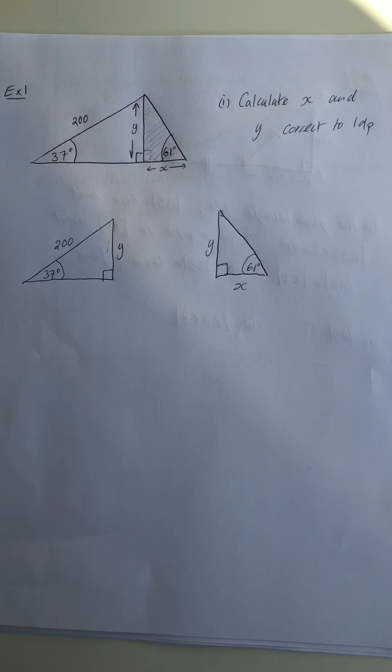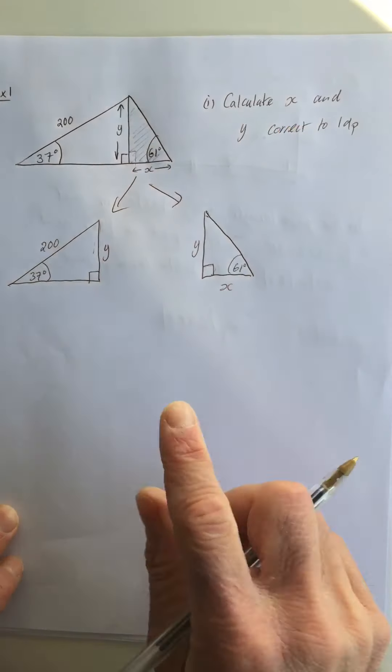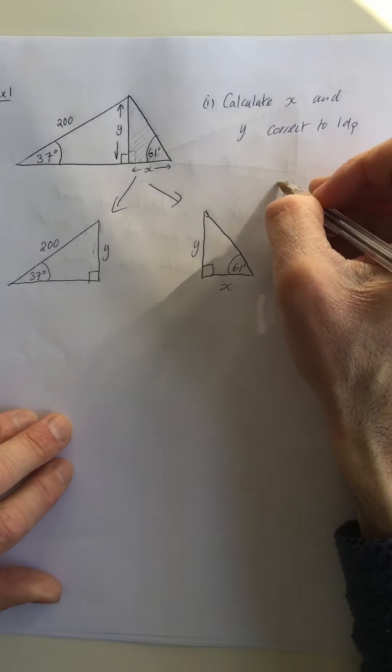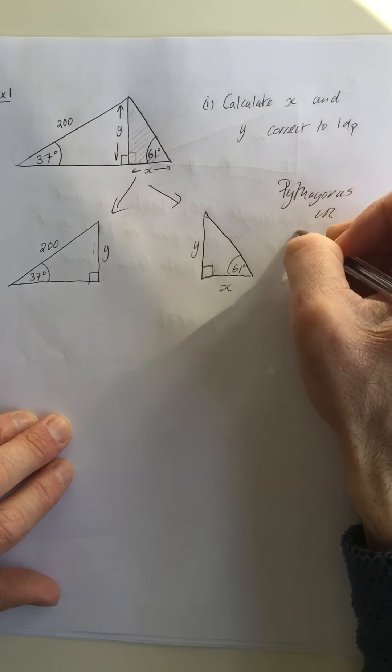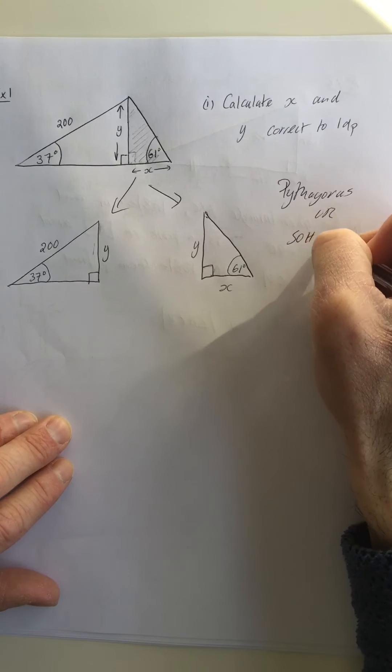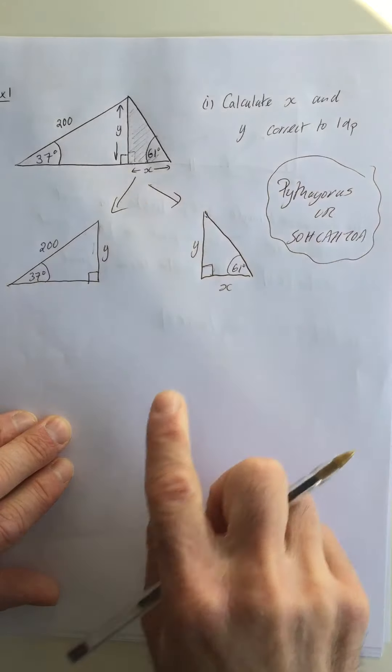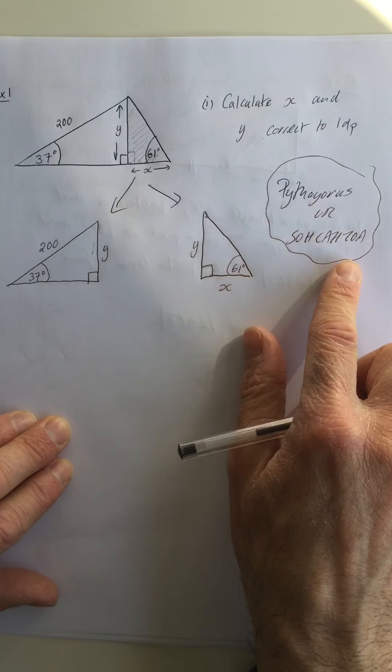So that's the first step: we break our triangle into smaller triangles. The next thing is we look at both triangles and we ask ourselves, are they right angle triangles? And yes they are. So once they're right angle triangles, that means possibly we can use Pythagoras or SOHCAHTOA. Keep that in mind: if there's a right angle triangle, we may be able to use Pythagoras or SOHCAHTOA.